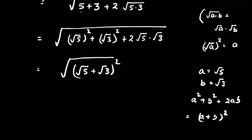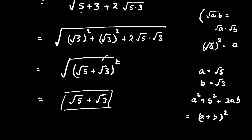Now we can cancel the outer square root with the square, so the answer is square root of 5 plus square root of 3. You can further simplify by substituting decimal values, or leave it in this form. Like and subscribe — thanks for watching.